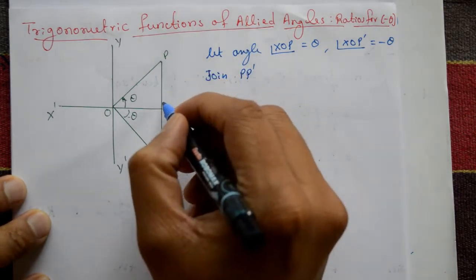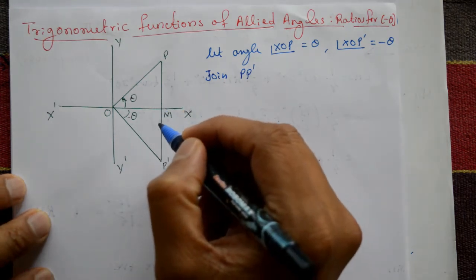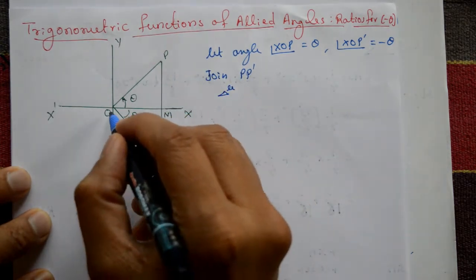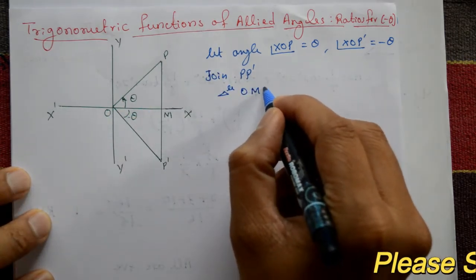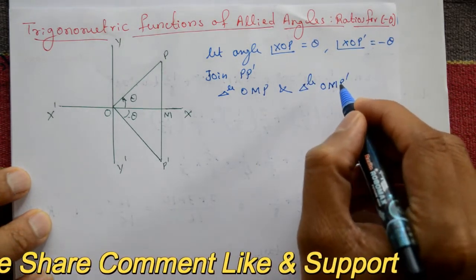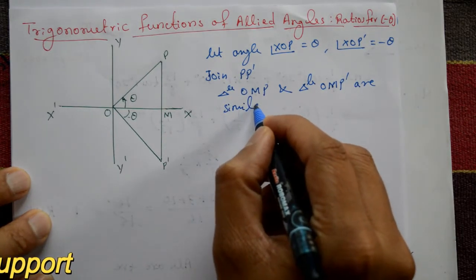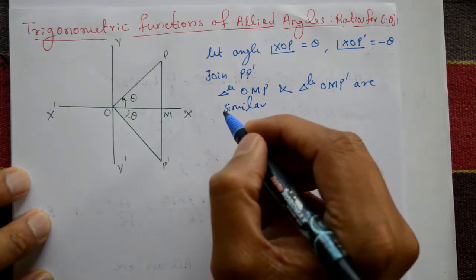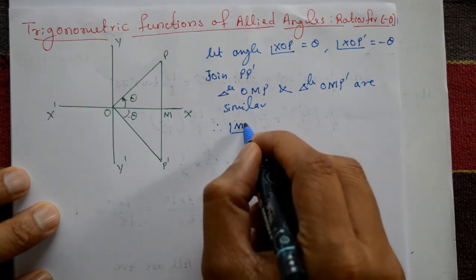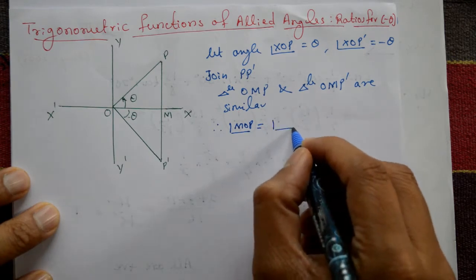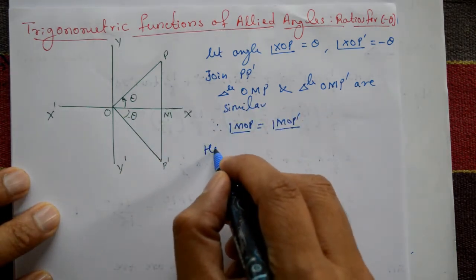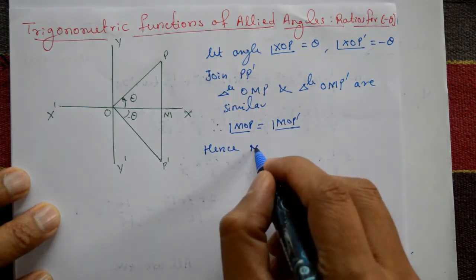Now join P and P dash, cutting the x-axis at point M. Triangle OMP and triangle OMP dash are similar — meaning this triangle and this triangle are equal. Therefore, angle MOP is equal to angle MOP dash — both are the same.